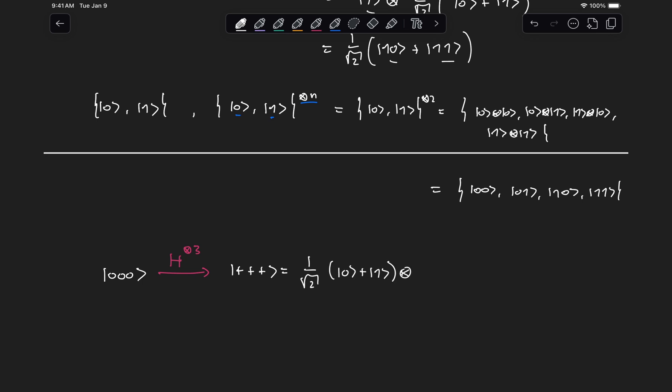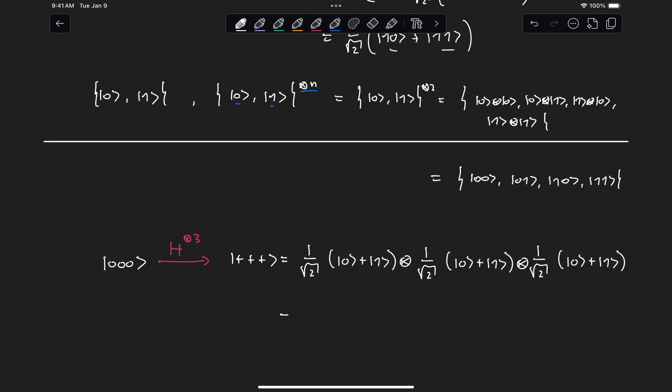Which we can represent as one over root two, zero plus one, and then that tensored with the same state twice, right? So this is going to be equal to a prefactor of one over root two to the third power.